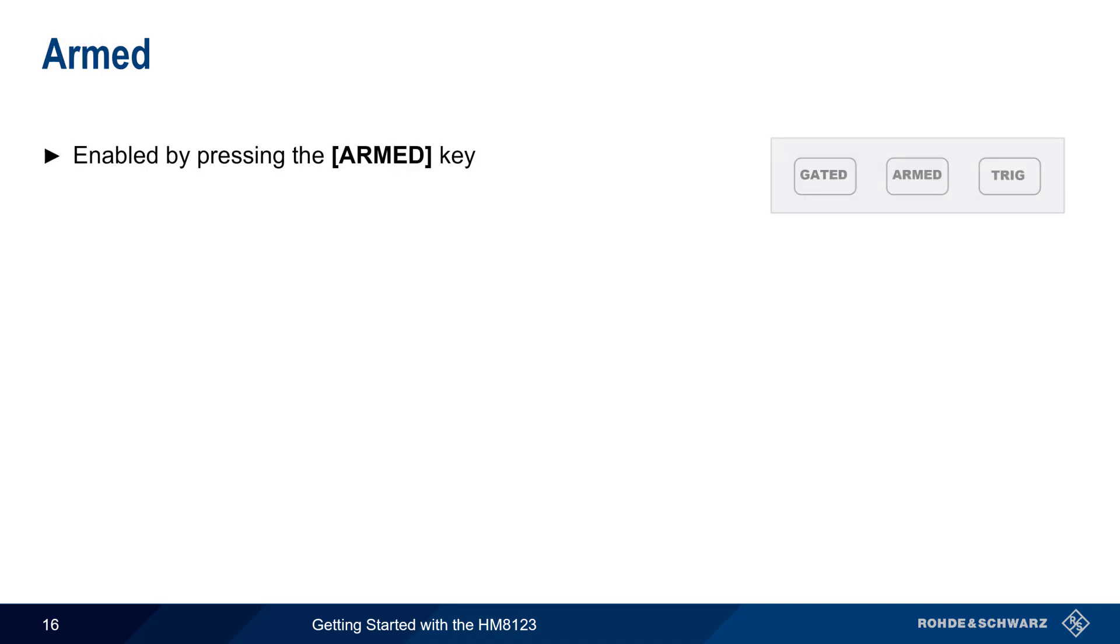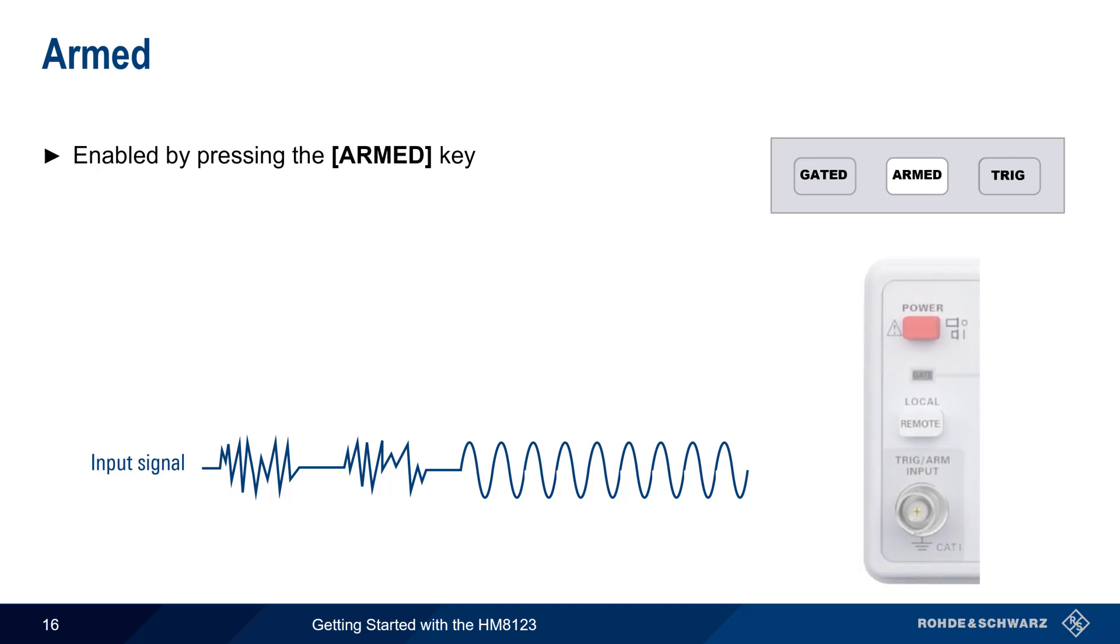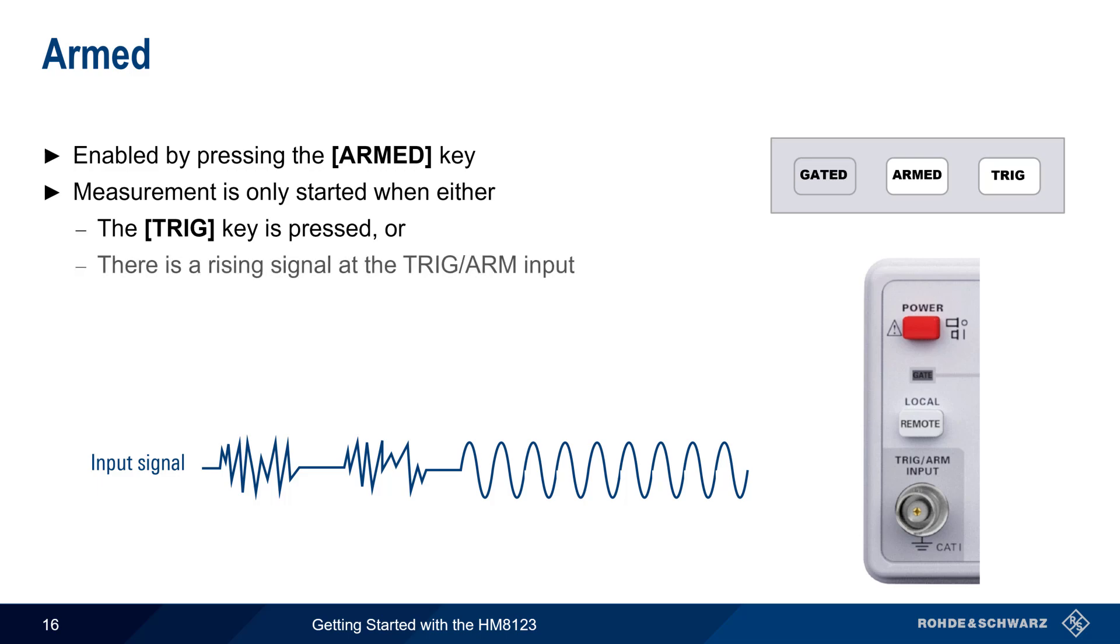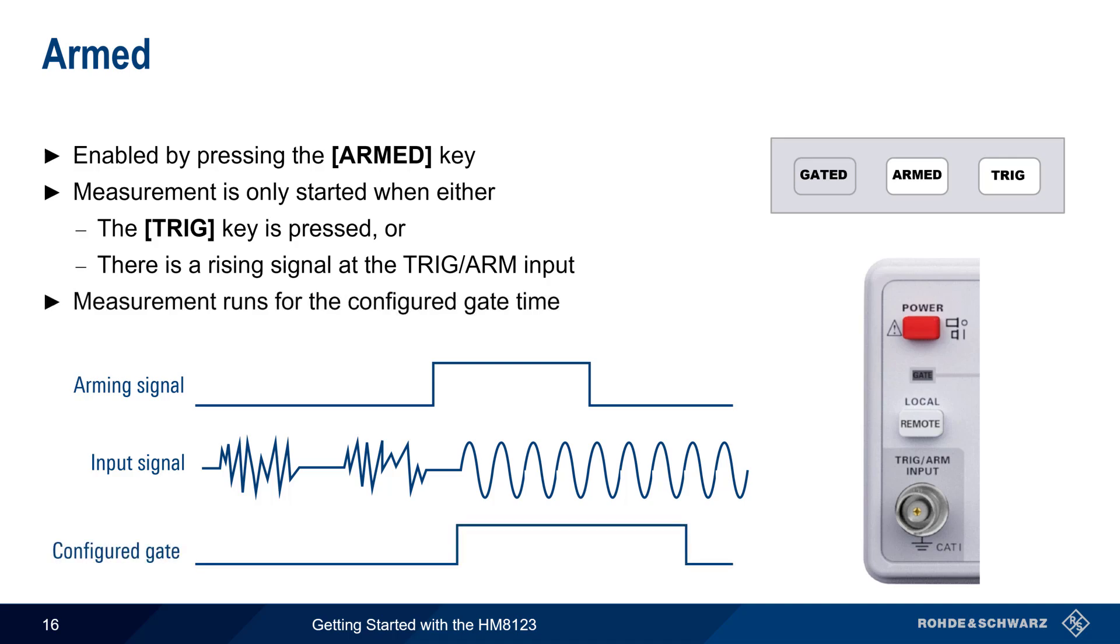The armed function is enabled by pressing the armed key, and this function helps prevent noise from triggering a measurement. Like Gated, it uses the external Trig Arm input on the front panel. When this mode is enabled, a measurement is only started when either the trigger key is pressed, or if there's a rising signal at the Trig Arm input. This arming signal, or trigger button press, then starts the measurement, which ends automatically at the end of the user configured gate time.